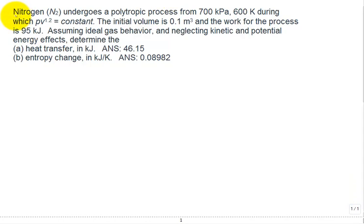So let's solve this problem. We have nitrogen undergoing a polytropic process from this pressure and temperature, during which PV to the 1.2 equals a constant, so the exponent n is 1.2 for this process. The initial volume V1 is 0.1 meter cubed, and the work for the process is 95 kilojoules, so we need to start organizing some information.